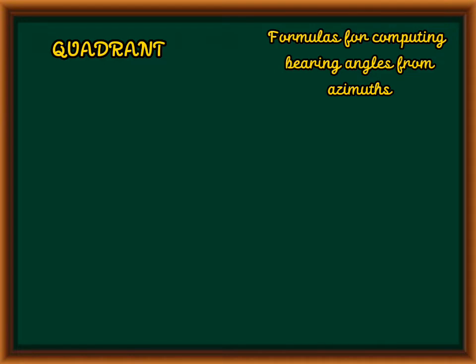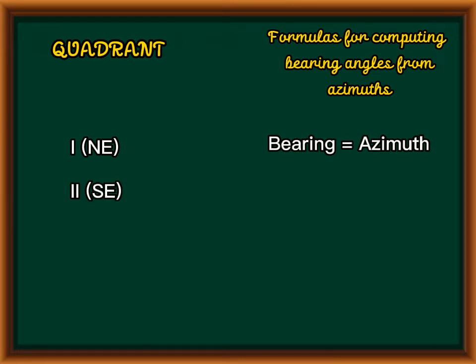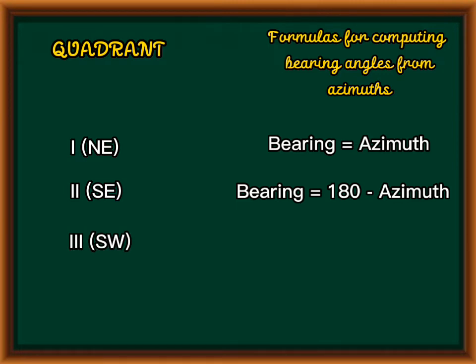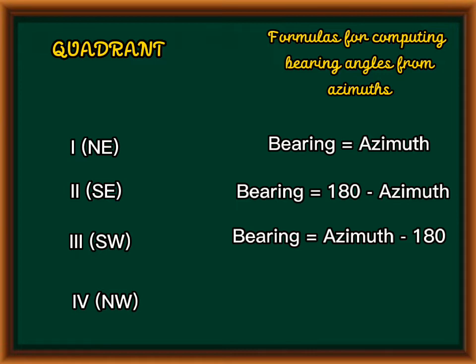Formulas for computing bearing angles from azimuths. In quadrant 1, northeast (NE), which is 0 to 90 degrees, the bearing equals the azimuth. In quadrant 2, which is 90 to 180 degrees, the formula is: bearing equals 180 minus azimuth. In quadrant 3, southwest (SW), which is 180 to 270 degrees, the formula is: bearing equals azimuth minus 180. In quadrant 4, northwest (NW), which is 270 to 360 degrees, the formula is: bearing equals 360 minus azimuth.